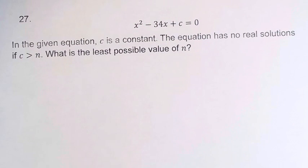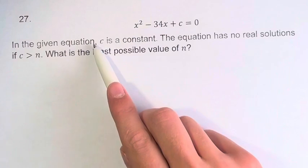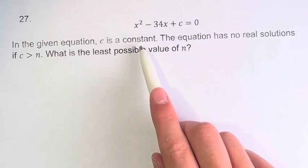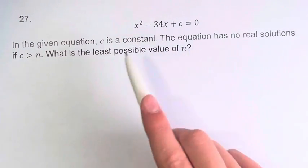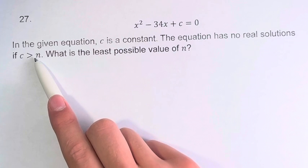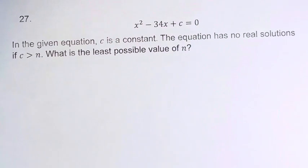Hello and welcome back to another video. In this problem, we're told that in the given equation, c is a constant, and the equation has no real solutions if c is greater than the value of n. What is the least possible value of n?